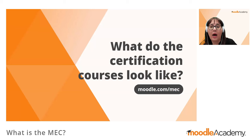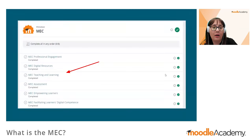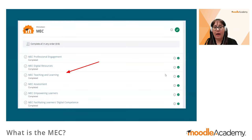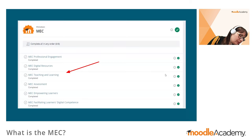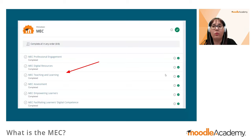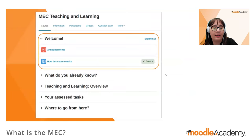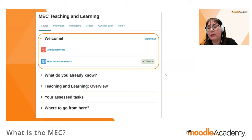Let's look at what the certification courses look like. When you join a Moodle Partner to take the MEC, they register you on the MEC site and allocate you to the MEC program. All MEC courses have the same structure. Taking the teaching and learning course as an example: the courses start with a welcome section that includes the announcements forum and a 'how this course works' book with all essential information for successfully completing the course.